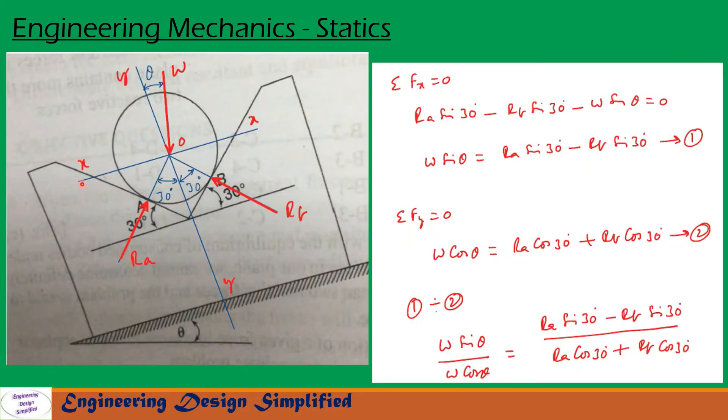First, let us draw a plane XX that is parallel to this face and let us draw another plane YY that is perpendicular to XX. If this angle is theta, then angle between W and this YY plane is theta. W is the weight of the ball acting vertically downwards.